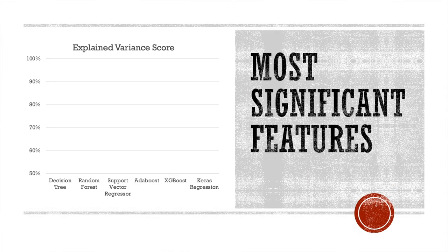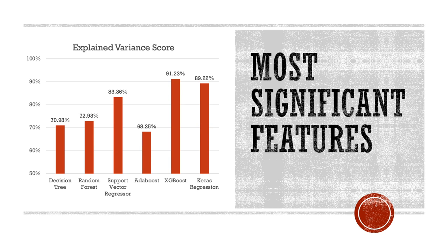Five traditional machine learning models as well as one deep learning model were engineered using a grid search. Each model was trained using five-fold cross-validation with 80% of the data, in an attempt to maximize the explained variance score — which tells us how much of the variance in homicide rates can be explained by the responses to these 20 questions about regional gun laws. XGBoost outperformed every model, including the Keras regression deep learning model. By examining the answers to these 20 questions, it achieved an explained variance score of 91.23% when tested on new data.